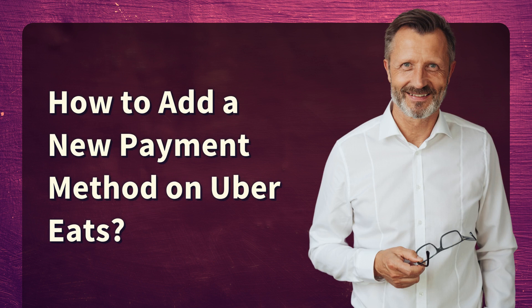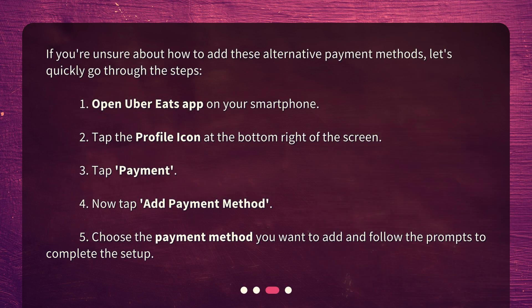If you're unsure about how to add these alternative payment methods, let's quickly go through the steps. 1. Open the Uber Eats app on your smartphone. 2. Tap the profile icon at the bottom right of the screen. 3. Tap Payment.